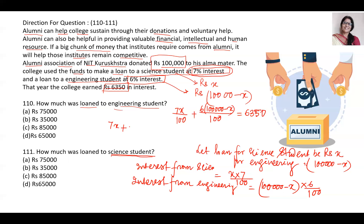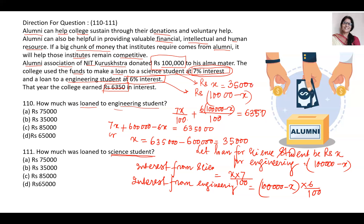Let us simplify. We expand: 7x over 100 plus 6 lakh minus 6x over 100 equals 6,350. Taking LCM as 100, the numerator gives 7x minus 6x equals x, so we get x plus 6,00,000 divided by 100 equals 6,350. Multiplying both sides by 100: x equals 6,35,000 minus 6,00,000 equals 35,000. So x equals 35,000. Since x is for science students, the loan to science students is Rs. 35,000, and the loan to engineering students is 1,00,000 minus 35,000 equals Rs. 65,000.